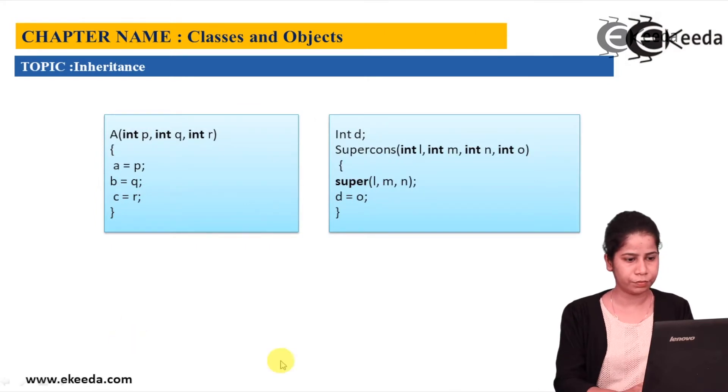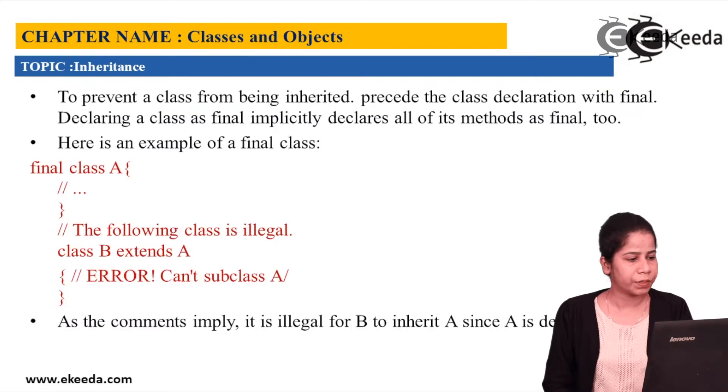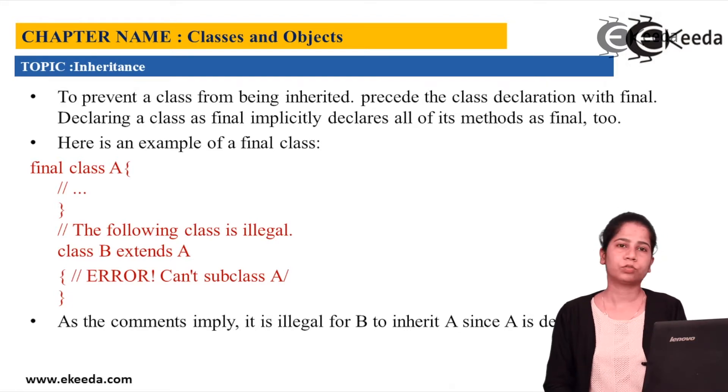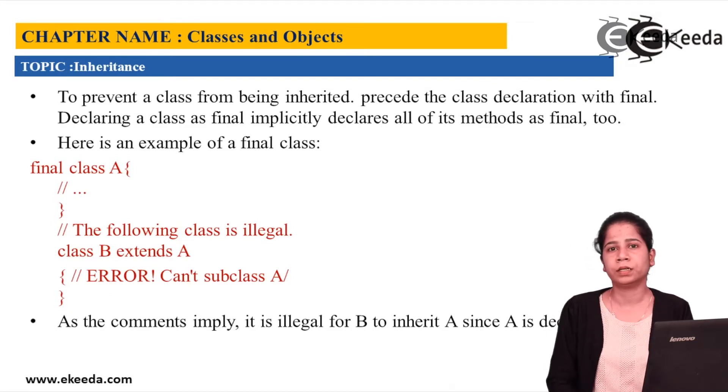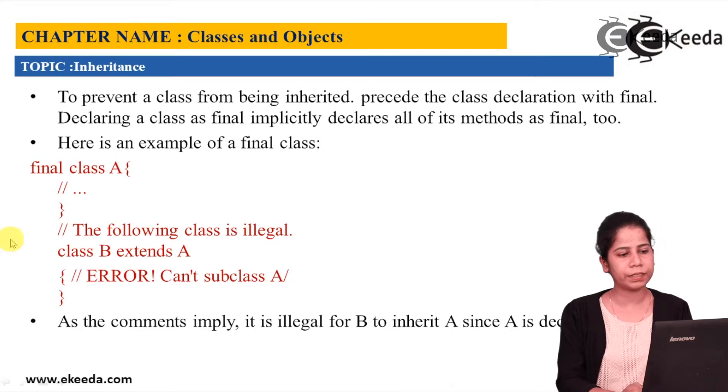Then we are having third use of final, that is final being given to the class. What if I will make my class as final? So if it is made as final, then that particular class cannot be inherited. So to prevent inheritance, if you want that class should not be inherited by anyone because of the security concerns, then you can avoid it by using final.